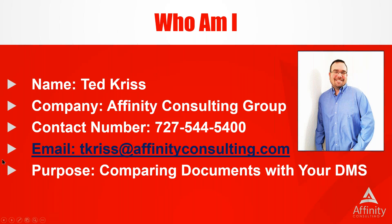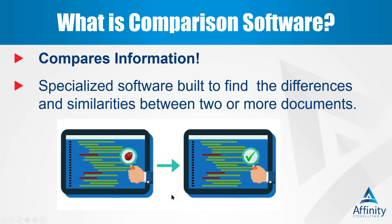The first thing we're going to address is the what. What is comparison software? This is the tool we're going to be using as part of our demo today, looking at how comparison software interacts with a document management system. Comparison software is pretty self-explanatory — it compares information. But more importantly, it's specialized to do so. It not only looks for similarities, but it looks for differences, and it can do that in a number of different document types.